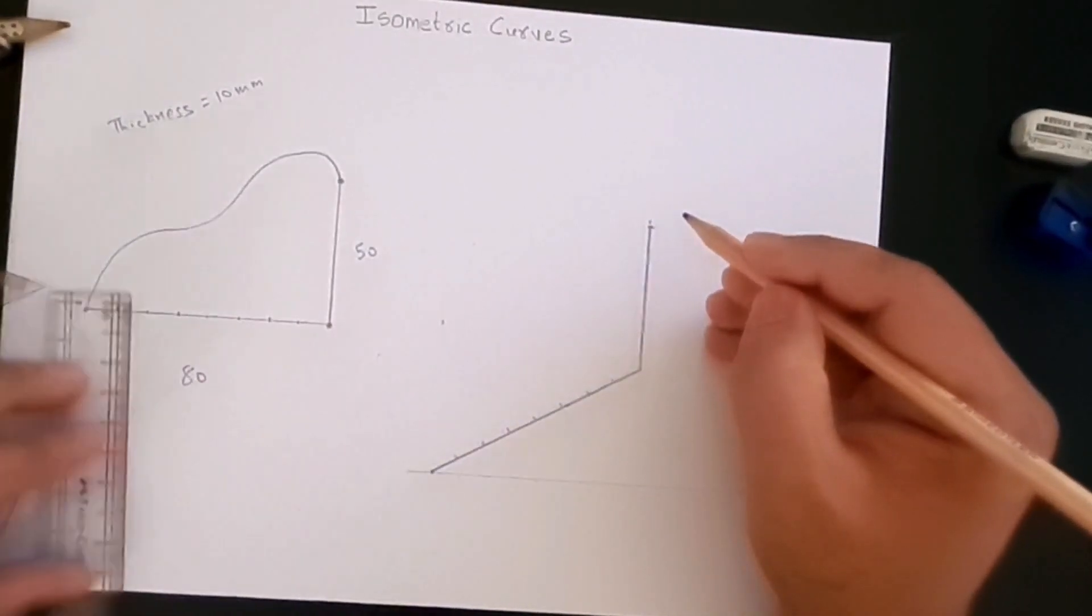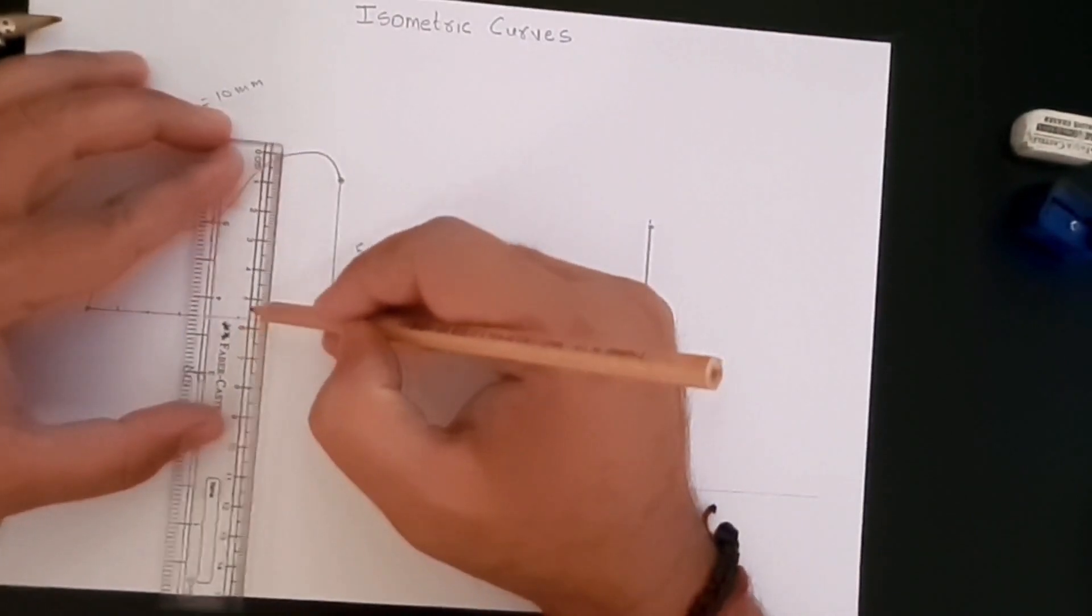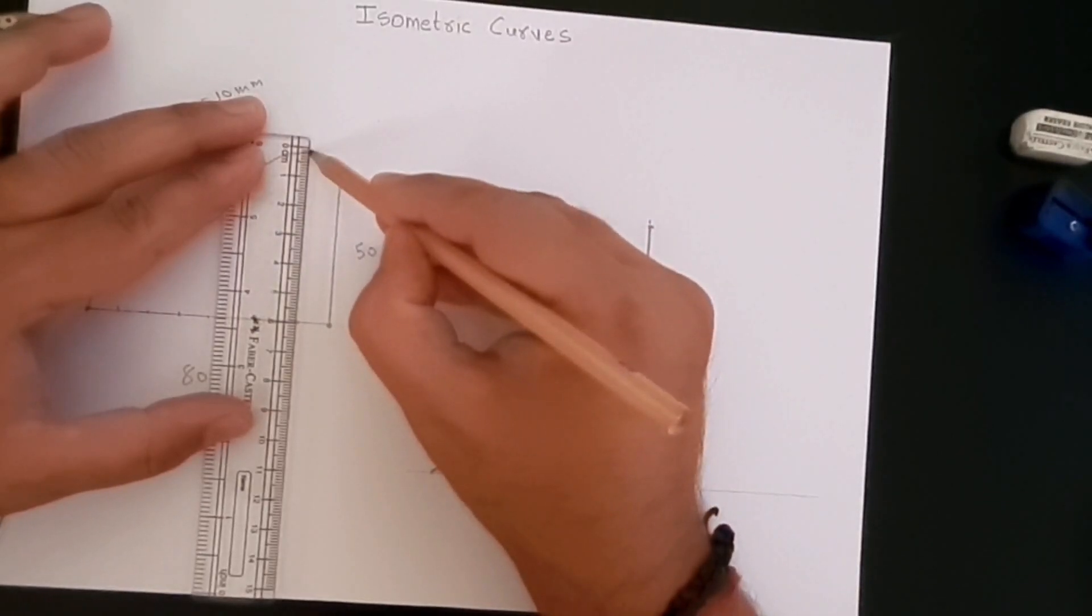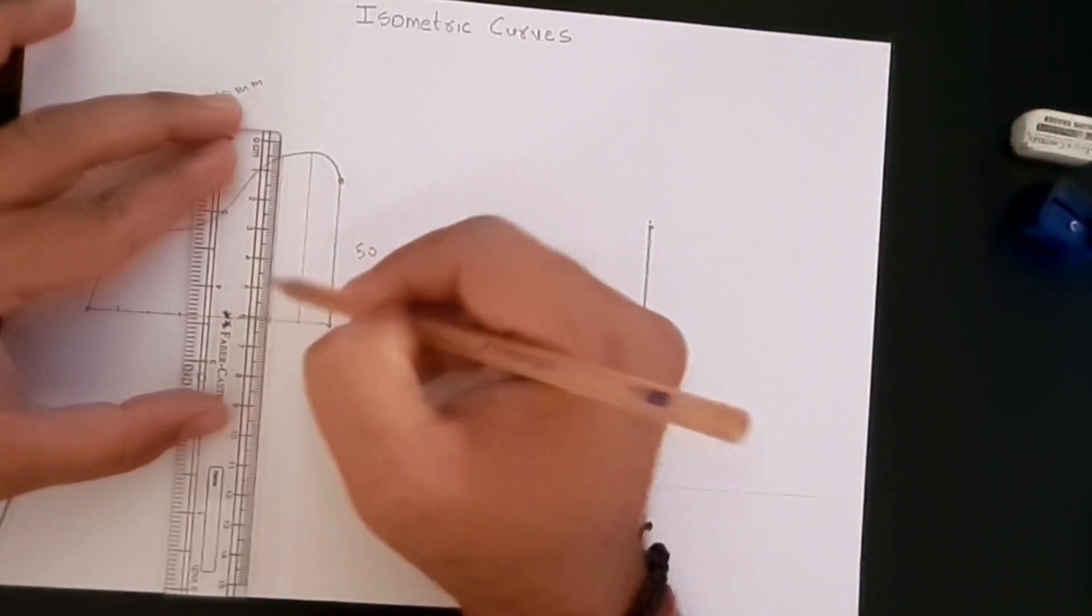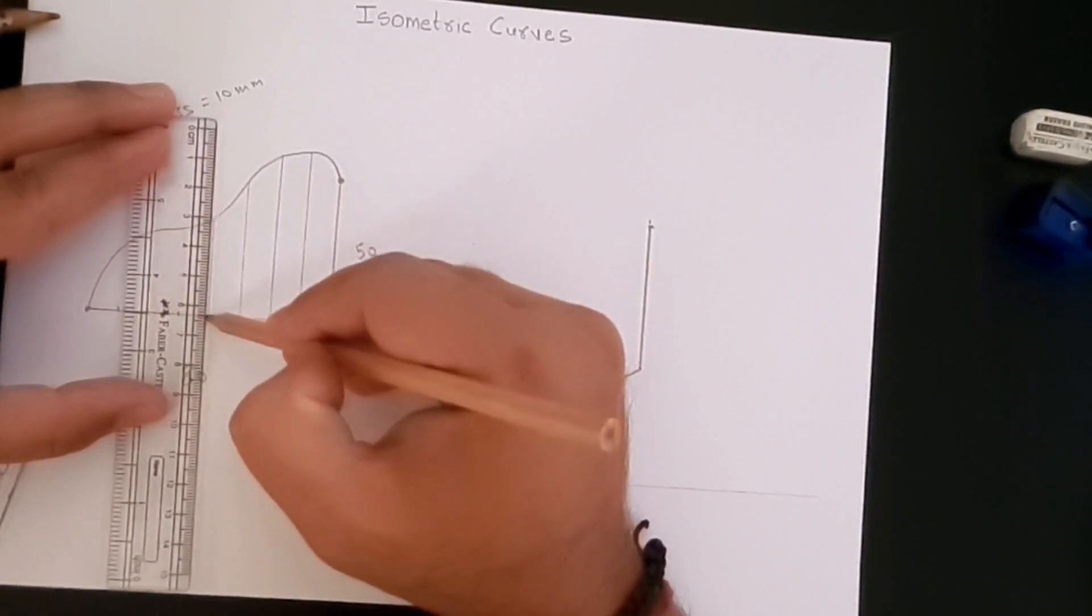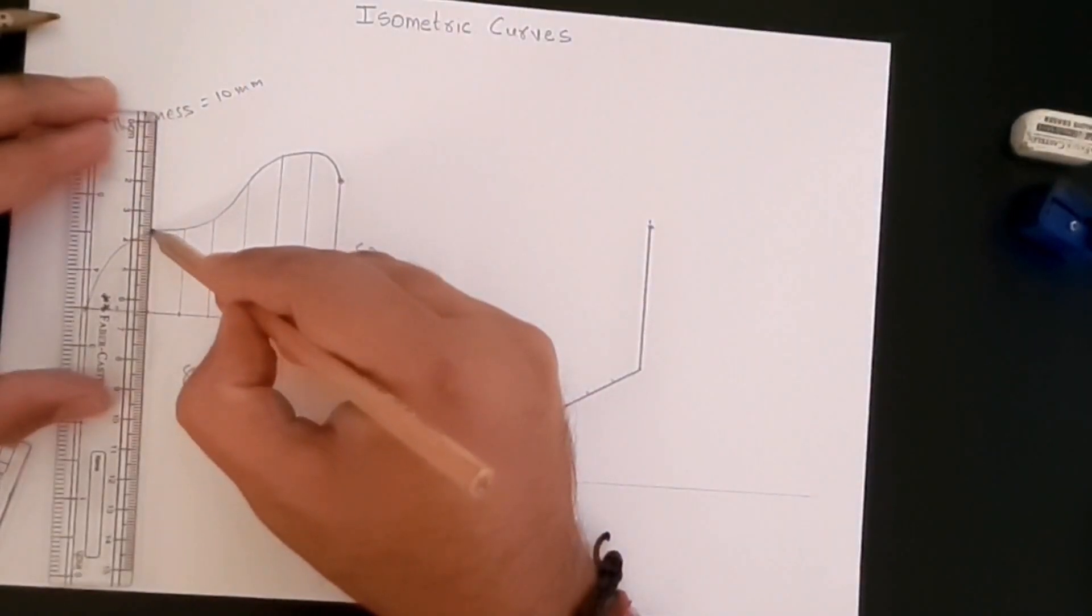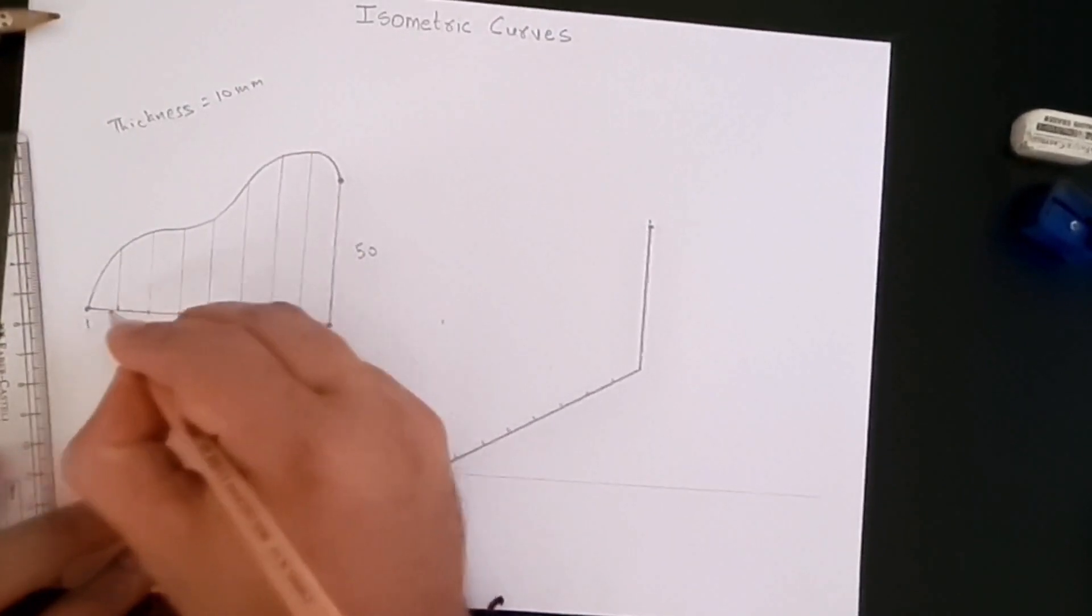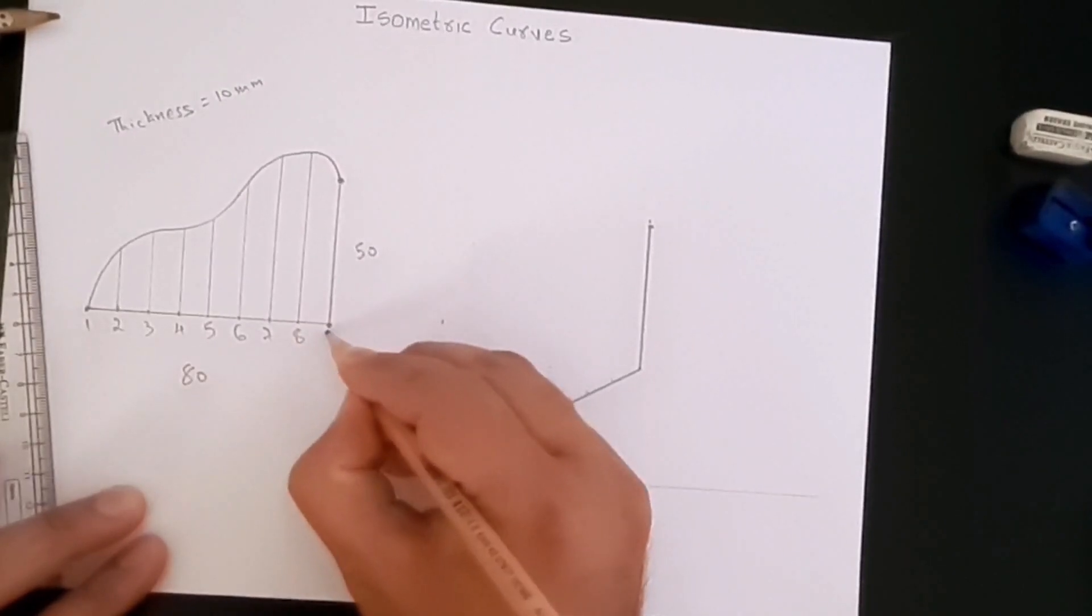Next, what we are going to do is create lines at the equidistant points that we created, which are parallel to this height. So let's start creating those lines. We'll create vertical lines at all those predetermined points. Now we can give them numbers as well: one, two, three, four, five, six, seven, eight, and nine.